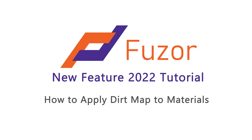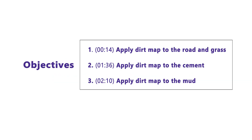This new feature tutorial video will teach you how to apply a dirt map to materials in Fuser, where we have many realistic settings in our material library to enhance the look of materials. The first objective is to apply the dirt map to the road and grass, the second is to apply it to the cement, and the third is to apply it to the mud.